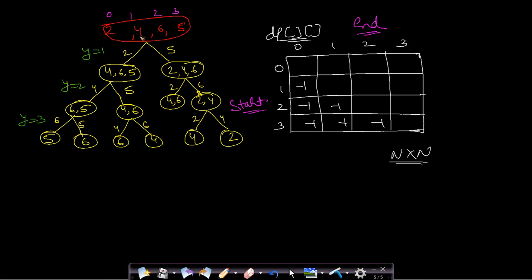Let us see why the DP solution works. Using the example 2, 4, 6, 5, we can sell from either end and only one bottle per year. I have drawn the full tree diagram of all choices. In year one you can select 2 or 5, giving two branches. The left branch selects 2, leaving 4, 6, 5. From there you can sell 4 or 5, and so on down the tree.